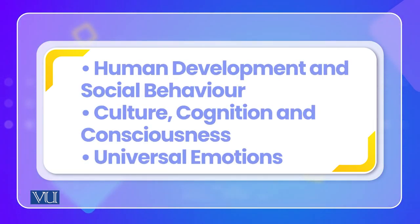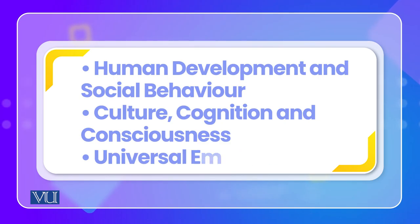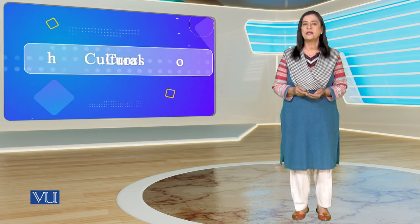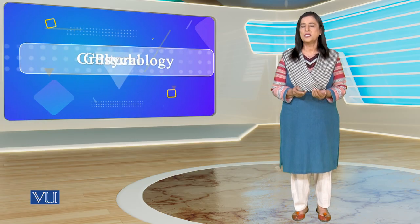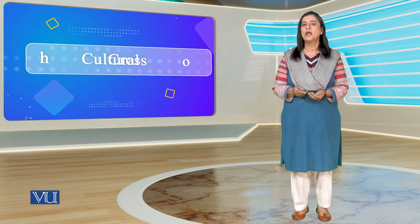Human development and social behavior includes cognitive development and moral development. We have seen where all these behaviors come from, including concepts about the human mind and consciousness. We have also covered culture and cognitive styles, such as field dependence, and then we looked at emotions.